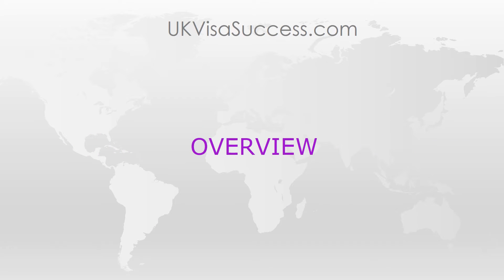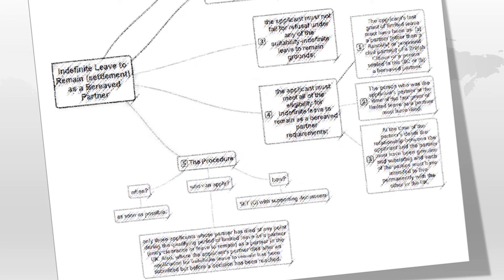I will start with an overview just to give you an idea of what this application is about. I have prepared what I think is a brilliant mind map which will help you get very clear about the application, the requirements which the applicant will need to meet, and the procedure. There are five steps — the first four are about the requirements and the last one is about the procedure. So let's begin.